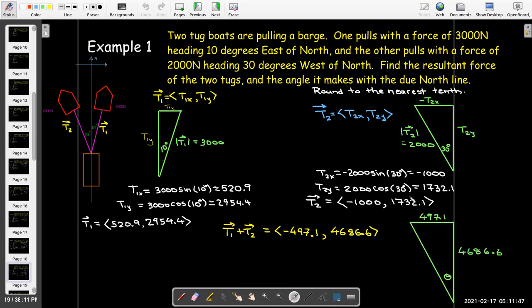I can draw another triangle to figure out what the angle would be with the north line. I have the value of each component that's opposite and adjacent, so that would be tangent of theta. Using my calculator with the inverse tangent, theta is approximately 6.1 degrees.